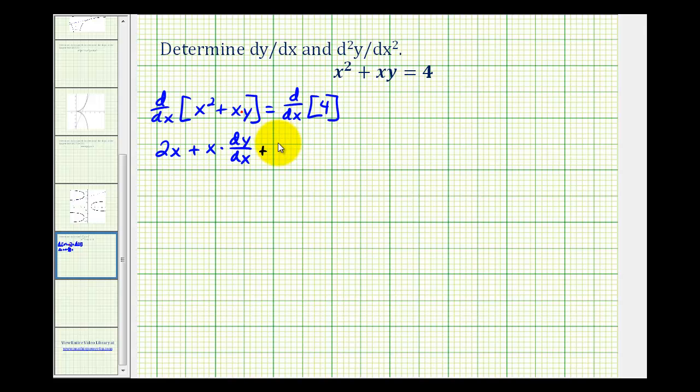Plus the second function which is y times the derivative of the first function. Well, the derivative of x would be 1. And on the right side, the derivative of 4 would be 0. So to determine the first derivative, we need to solve this for dy/dx.